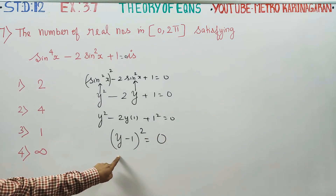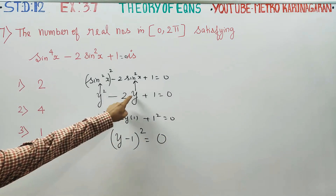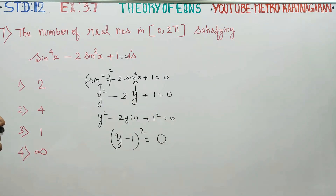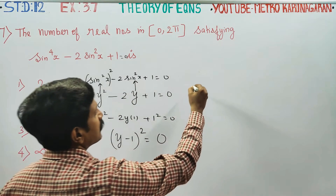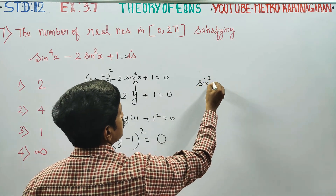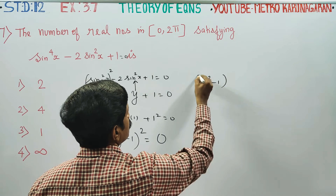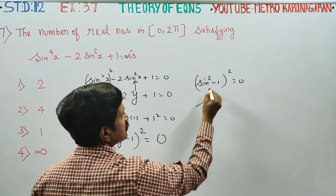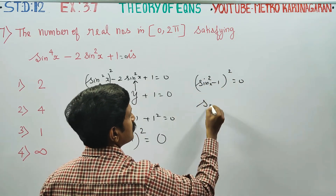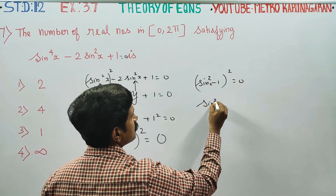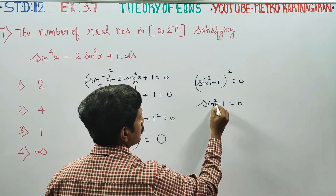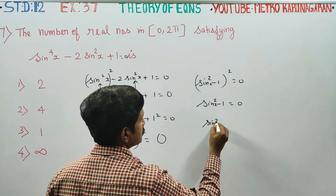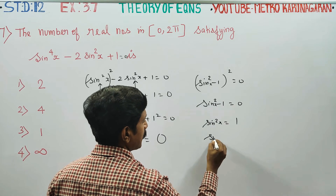What is y? y is sin²x. So we have (sin²x - 1)² = 0. Taking square root on both sides, sin²x - 1 = 0, which gives sin²x = 1.